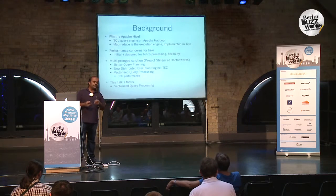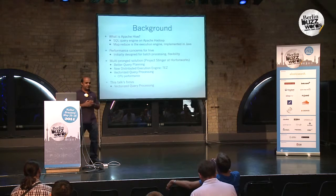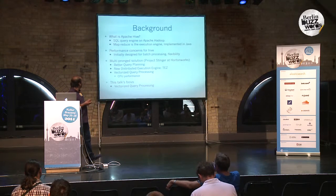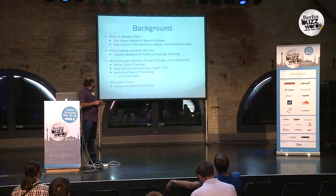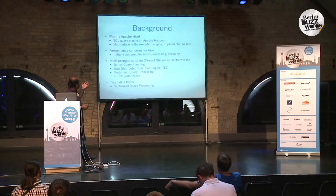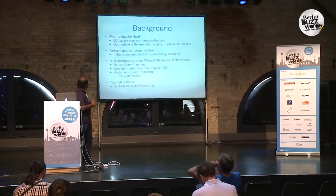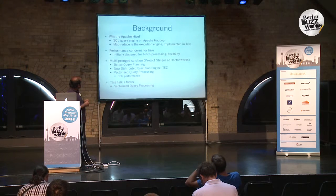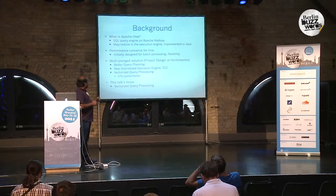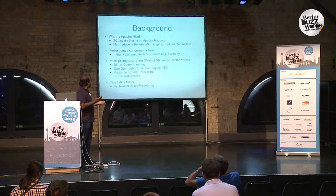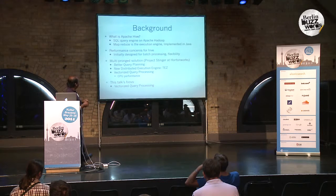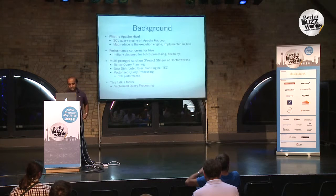We have seen some performance concerns around Hive in recent times, because Hive initially came for batch processing and for flexibility — supporting all possible data formats. Those were the initial driving forces, which worked great for ETLs or batch workloads, but for BI or interactive workloads it hasn't been working great. So we have to work on its performance. Hortonworks started a project called Stringer. We have to do better query planning, change the execution engine, and we are replacing MapReduce with Tez, which is much more efficient. But this talk is only about the query processing, that is the CPU performance.